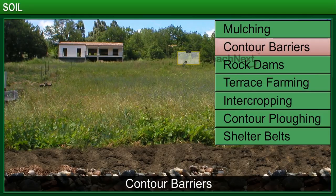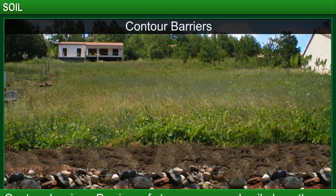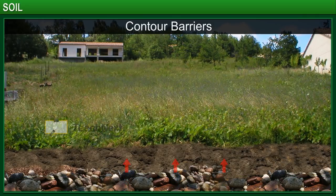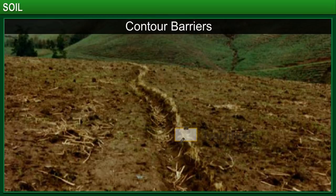Contour barriers refer to barriers of stone, grass, and soil built along the contour lines of a slope. Trenches are built in front of the barriers to collect water and prevent it from flowing down the contours and washing away the soil. Many farmers in northern Thailand have used this method to conserve soil, as the area has steep slopes that are prone to soil erosion.